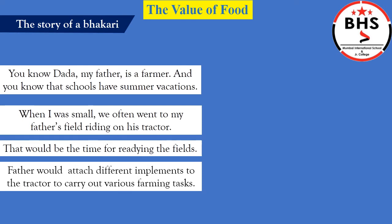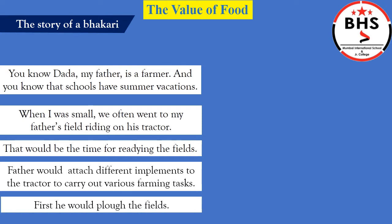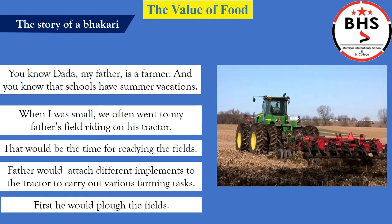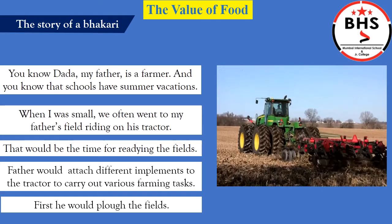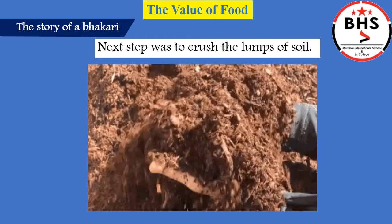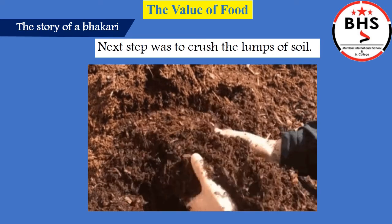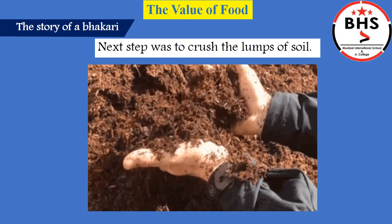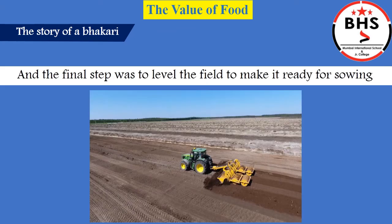Mother said her father would attach different implements to the tractor to carry out different farming tasks. First, he would plough the fields. Ploughing means to dig and turn up the fresh soil. Next step was to crush the lumps of soil to loosen the soil. And the final step was to level the field — to make the field flat at one level — so that it becomes ready for sowing.